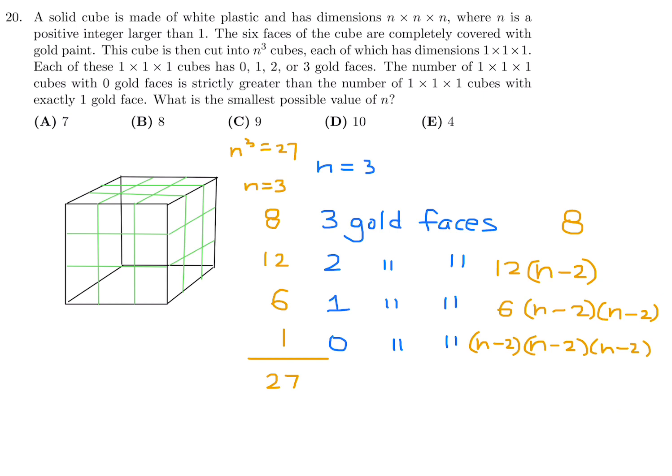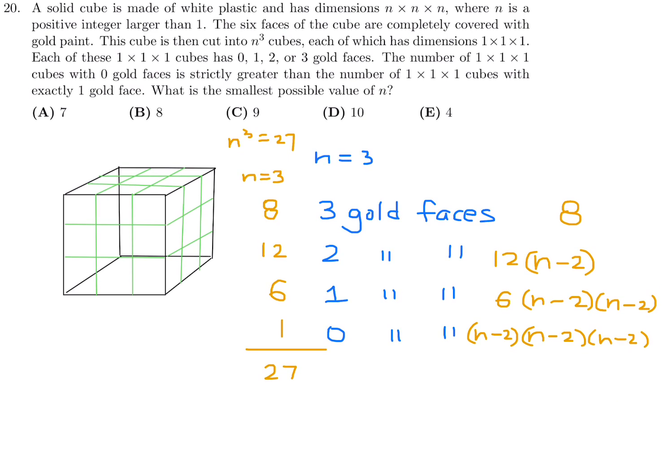But now the criteria is that the number of cubes with zero gold faces is strictly greater than the number of cubes with one gold face. So zero gold faces was this n minus 2 to the power of 3 right here. And one gold face was 6 times n minus 2 squared. This guy right here. And this is the inequality. So the n minus 2 squared from both sides cancel, and you're left with n minus 2 is greater than 6. Therefore, n is greater than 8. n has to be greater than 8. So the smallest possible integer value for n is 9, since n is greater than 8. And therefore, number 20, the answer is C.